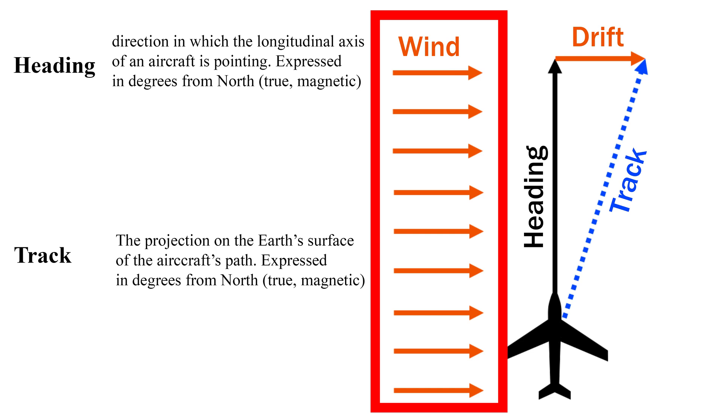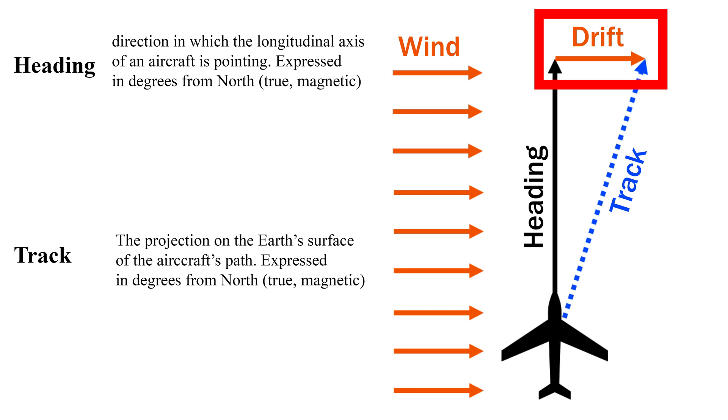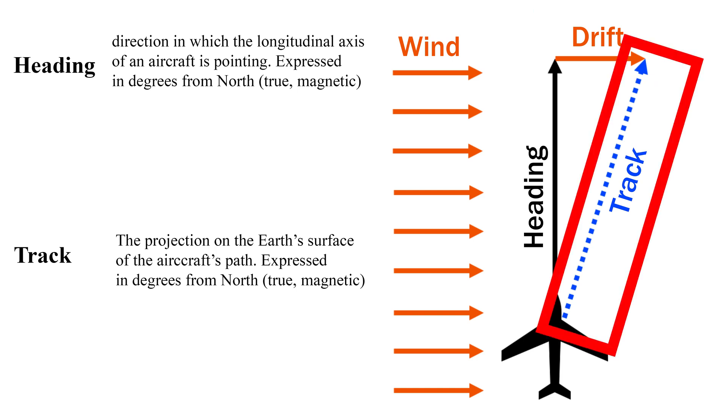But what if there is a wind blowing from the aircraft's left side? This will create drift and make the aircraft deviate from its heading. The actual path the aircraft will fly is called track as shown on the diagram. As you can see, the wind will not only make the aircraft deviate from its heading but also affect its ground speed by creating a drag in the air.